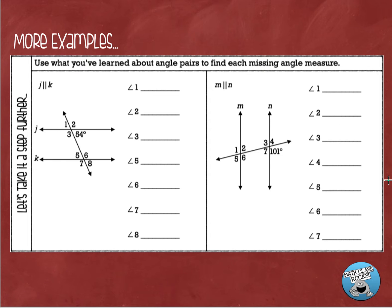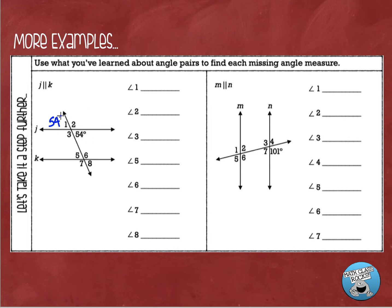Now we've got lines J and K. Lines J and K are parallel lines being cut by a transversal. This symbol right here means that J is parallel to K. Angle 1 is 54 degrees. There are other angles that are also going to be 54 degrees. One of them is the vertical angle across from it — it is right across from this 54 degree angle, and that means they are congruent.